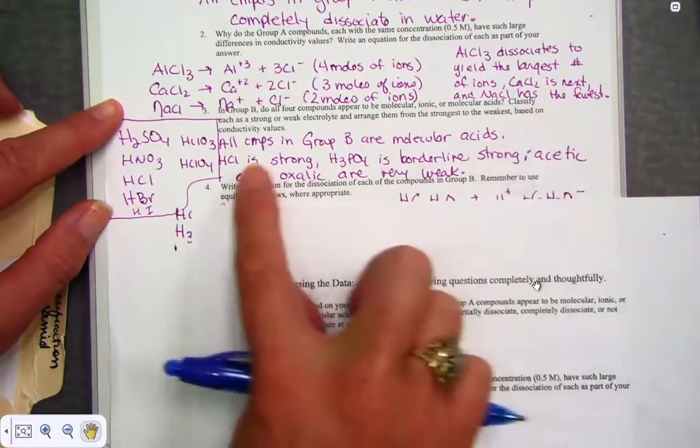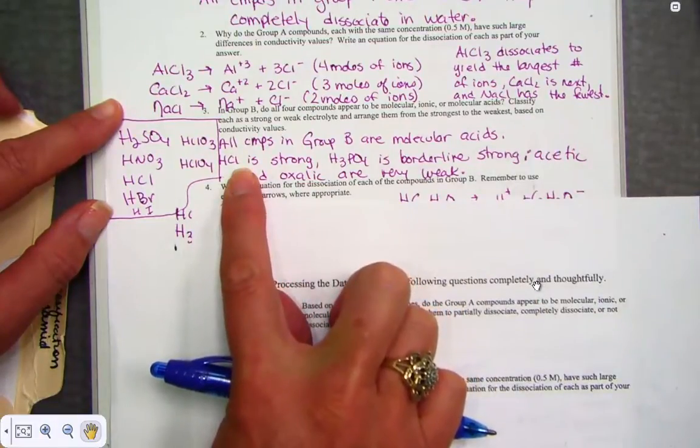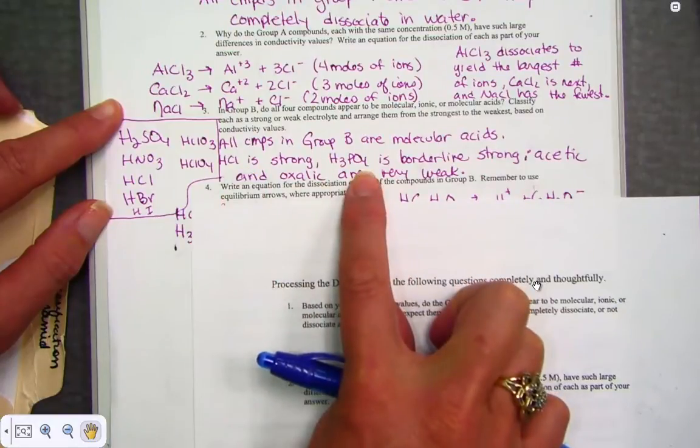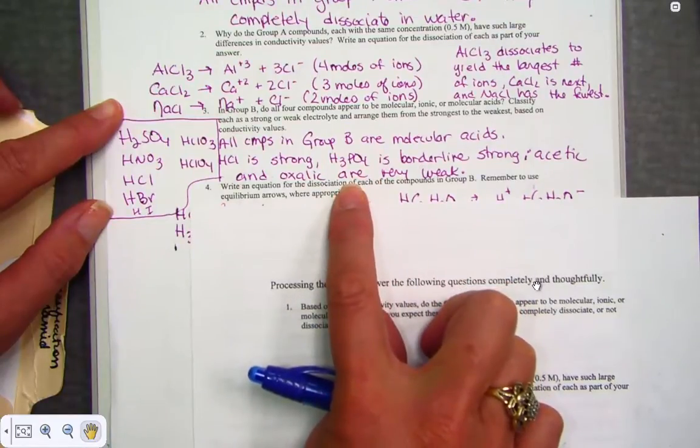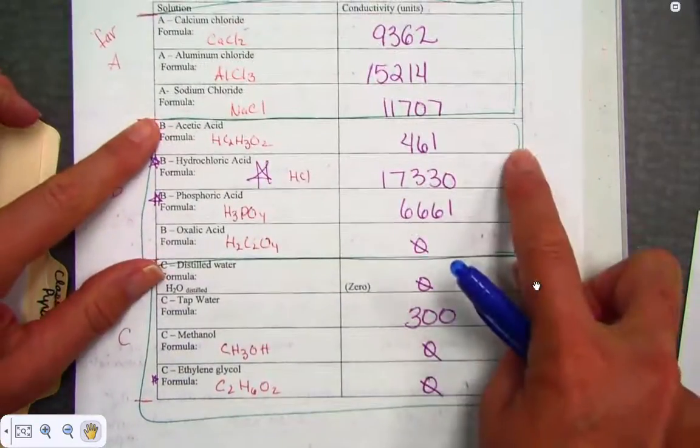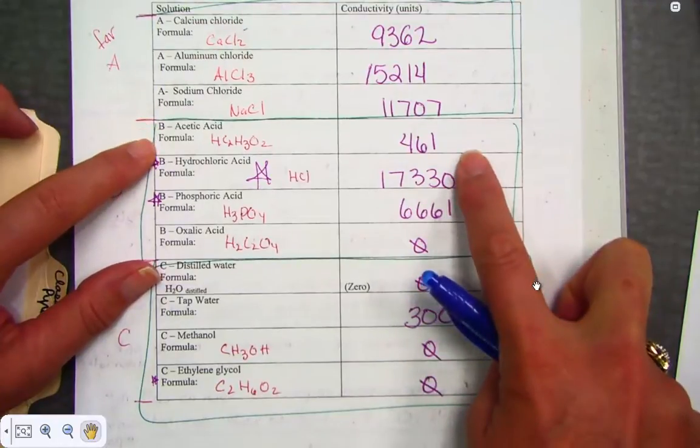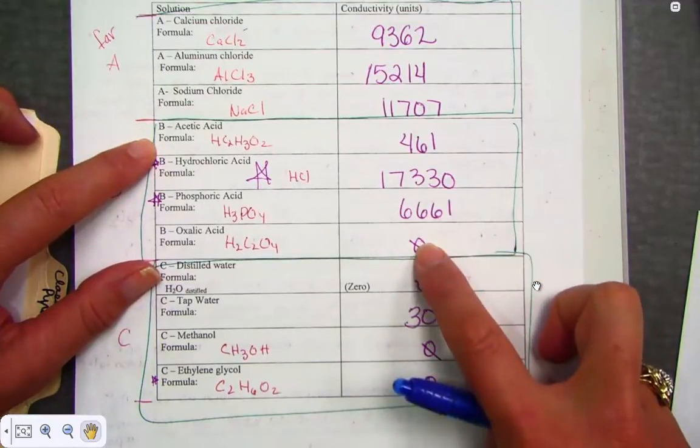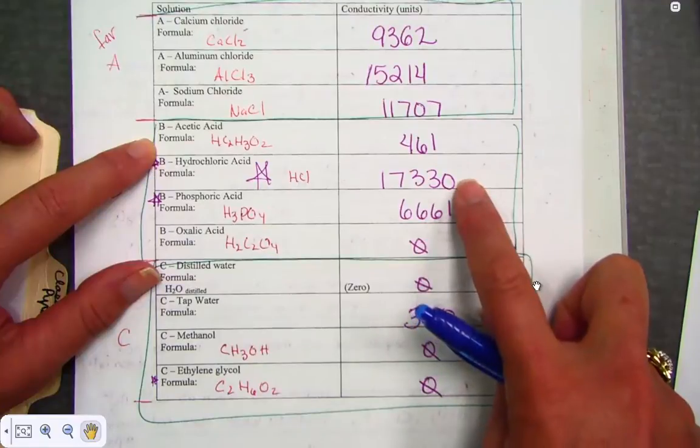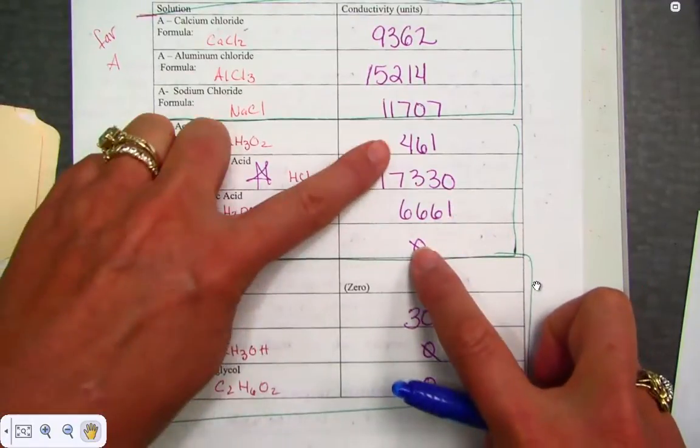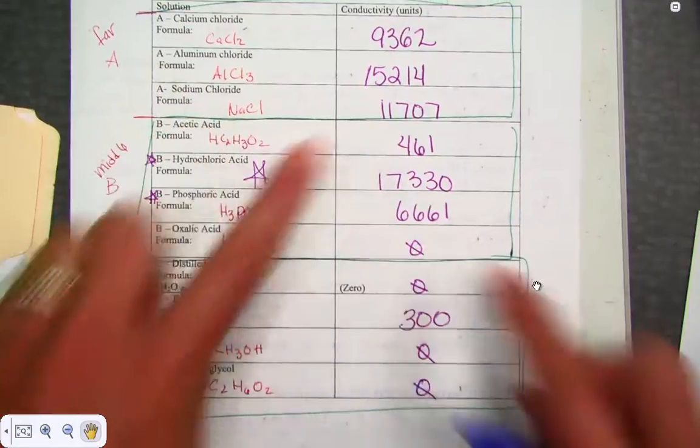So looking at our data in group B, all were molecular acids. HCl is considered strong. Although phosphoric acid did give us a number that's borderline strong, it was quite a nice conductor. Acetic acid and oxalic acid were very weak. Again, let's verify by reminding ourselves of some of those numbers. Phosphoric acid did give us a significant reading. Acetic acid not so much, and oxalic acid probably the least. Strong, borderline strong, and then definitely the weak category for weak molecular acids.